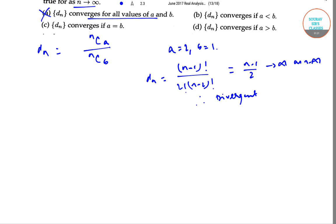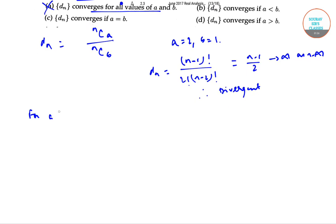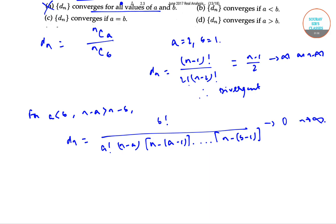Now, for a < b with n-a > n-b, we have d_n equal to b! divided by [a!(n-a)(n-a-1)...(n-b-1)], which gives us 0 as n tends to infinity. So option B is correct.